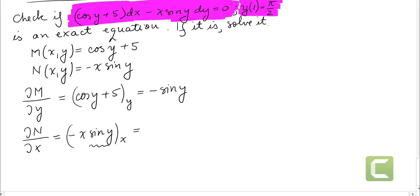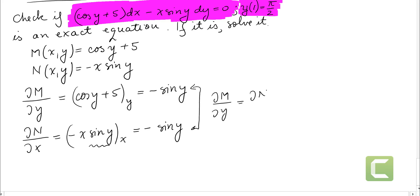So this quantity is basically rewritten as negative sine of y, and then times x prime with respect to x, which is 1. We notice that when we differentiate M and N, we get the same thing. So the derivative of M with respect to y equals the derivative of N with respect to x, which is the condition of exactness — so it means the equation is exact.